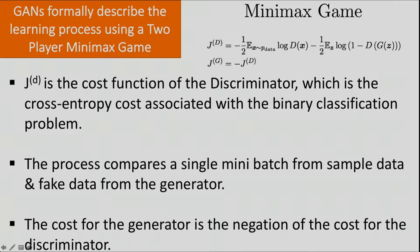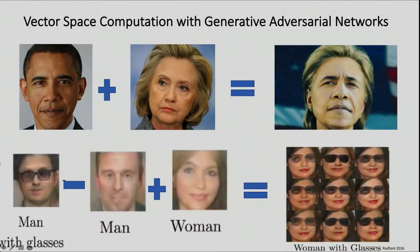Formally, this describes a learning process using a two-player minimax game. J superscript D is the cost function of the discriminator, which is the cross-entropy cost associated with a binary classification problem. The process compares a single mini-batch from sample data and fake data from the generator, and the cost for the generator is the negation of the cost for the discriminator. That's the general principle. You can also do some interesting vector space computation — for example, synthetically generating images using vector space arithmetic, such as: a man with glasses minus a man plus a woman.